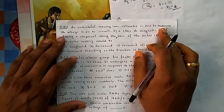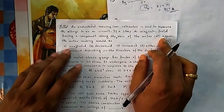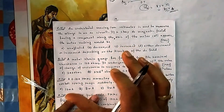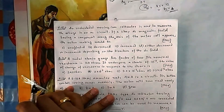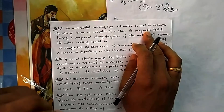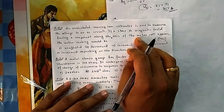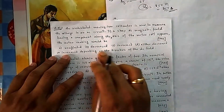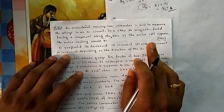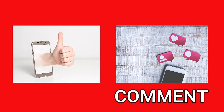In question ten, a moving iron voltmeter is used to measure voltage in an AC circuit. If a stray DC magnetic field with a component along the x-axis of the meter coil appears, it will affect the overall magnetic field. Depending on the direction of the stray field, it may increase or decrease the meter reading. So the reading will either be higher or lower than the true value depending on the direction of that stray DC field.